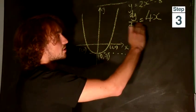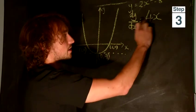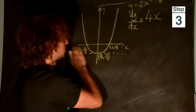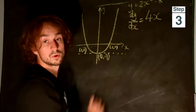When we know the differential is 4x, we can then work out exactly where this is equal to 0. This will give us where the minimum point lies.